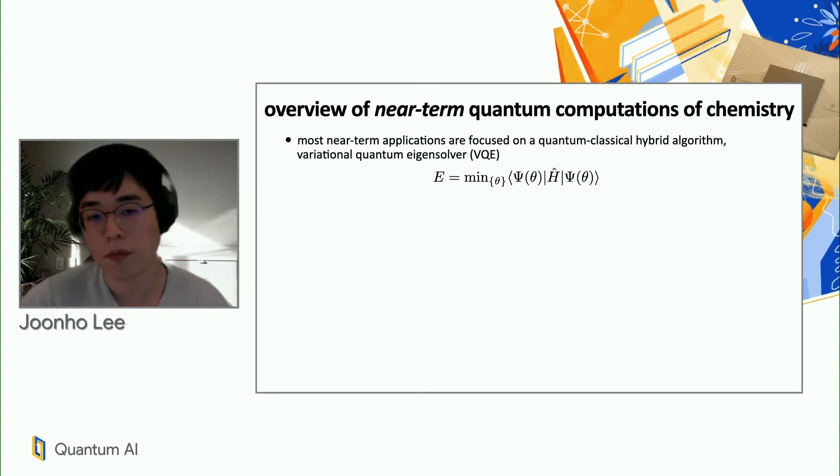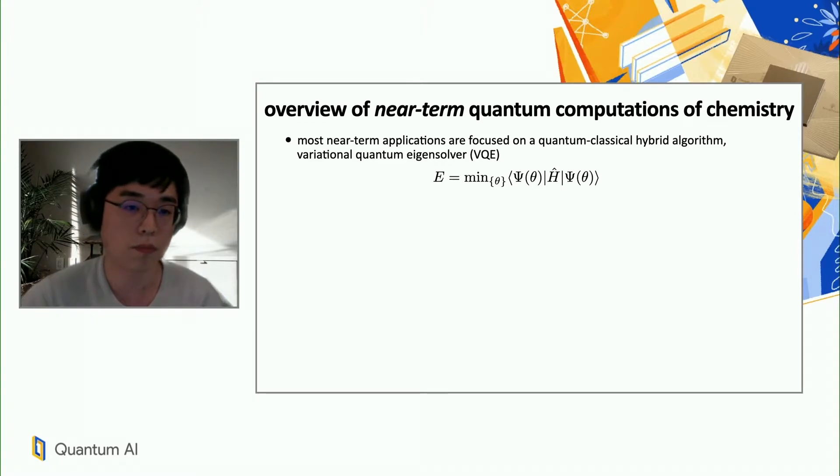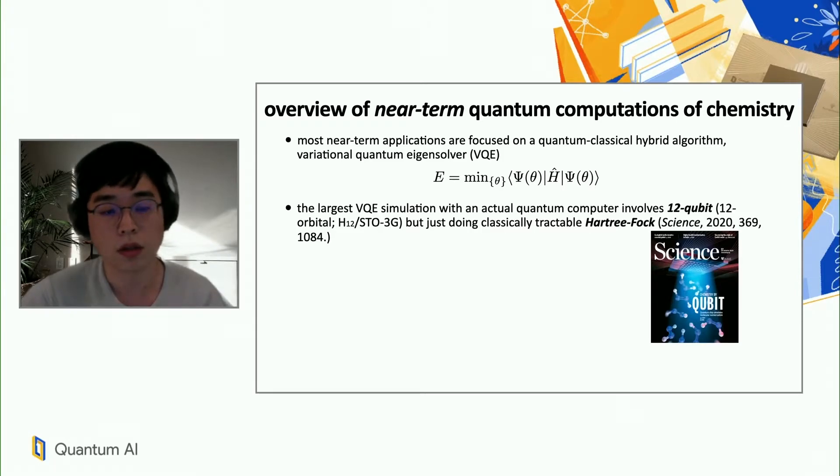As many of you probably know, most near-term applications are focused on a hybrid algorithm called variational quantum eigensolver. The idea of VQE is very simple. We minimize this variational energy expression by varying the wave function parameter theta, and we seek this minimizer using quantum computer and classical computer all together. The largest VQE simulation so far was done by the Google Quantum AI team last year, which is to do classically tractable Hartree-Fock calculation up to 12 qubits.